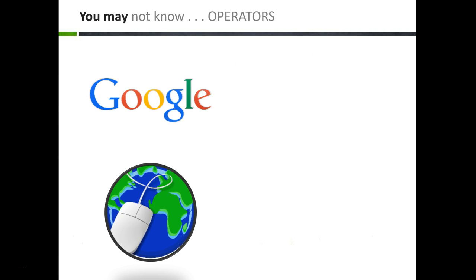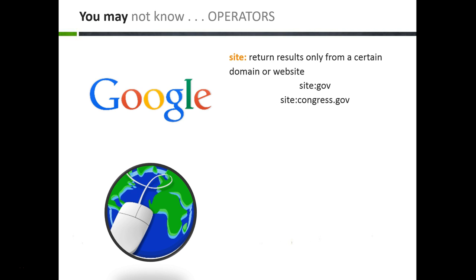You may not be aware that Google has some operators that can greatly benefit your searches. The site operator allows you to search for a specific domain type or a specific website. For example, you could search for 'refugee crisis' and limit your results to only .gov sites or a specific website like congress.gov. When using any Google operator, make sure that you do not include a space between the colon after the operator and the limiter. Your search should be: refugee crisis site:gov, with no space between the colon and gov.